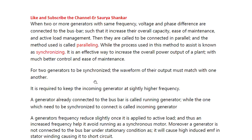For two generators to be synchronized, the waveform of their output must match one another. So the first condition of synchronization is that the waveforms of the two generators have to be the same. It is also required to keep the incoming generator at a slightly higher frequency. This is important — the incoming generator has to be kept at a slightly higher frequency. A generator already connected to the bus bar is called the running generator.